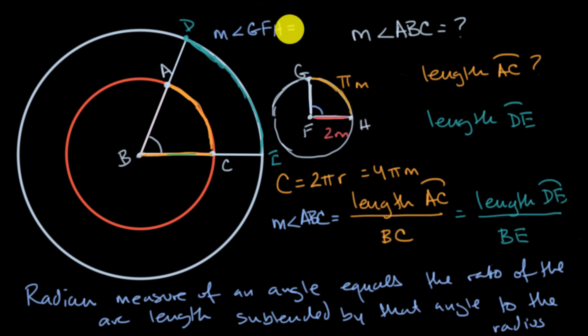And so it's going to be pi meters over two meters. The meters, you could view those as canceling out, which equals pi over two. And pi over two what? Well, we would say this is equal to pi over two radians.